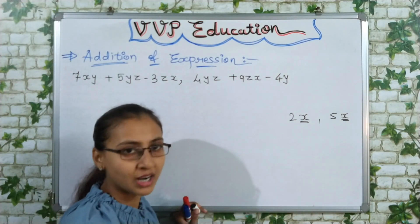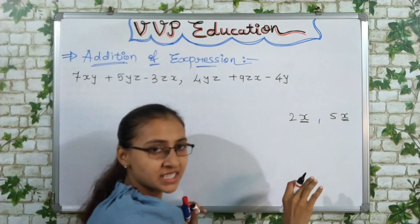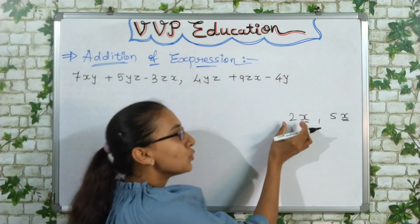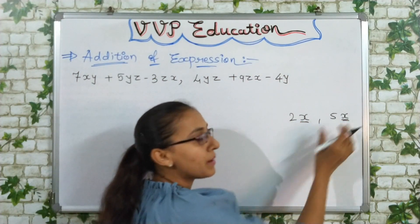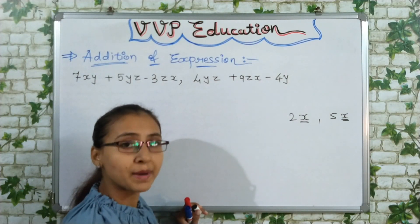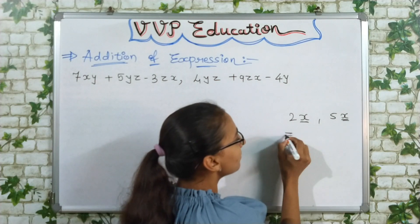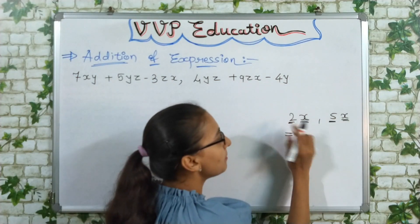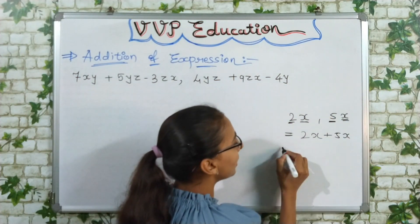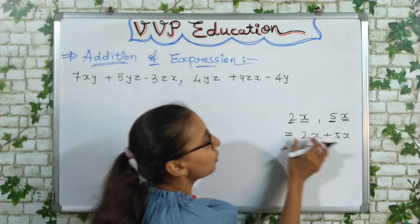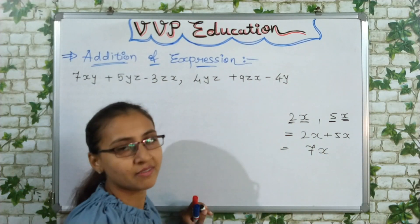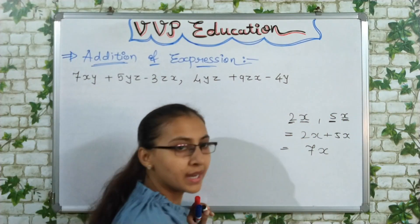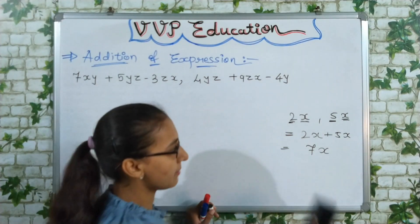Just as I counted apples with apples and oranges with oranges, similarly here I have 2x and my friend has 5x, so total we have 7x. We just need to add the numeric factors: 5 plus 2 equals 7, so together we have 7x. So remember: only like terms can be added — we add only the numeric factors and keep the algebraic factor as it is.